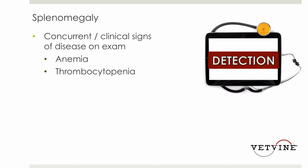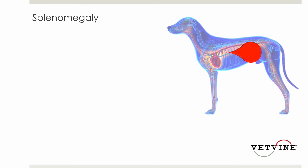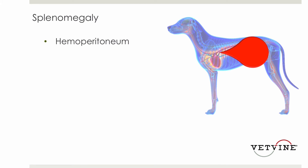We can have splenomegaly that's very overt or it may be occult. One of the other things that often heralds us that there is splenic disease present is when a dog presents with hemoperitoneum, and this is often secondary to splenic rupture.